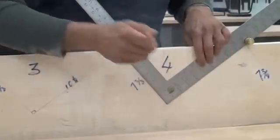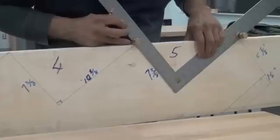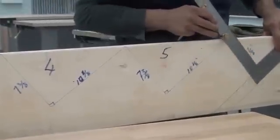So again, down the rise, across the run, the number 4. And then for the last one, down the rise, across the run, the number 5. And then at the end.